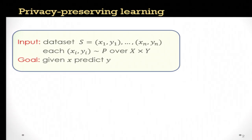We'll be looking at the standard setting of supervised learning in which you're given a data set which consists of n labeled examples, which for most of this talk we'll be thinking of as being drawn IID from some unknown distribution P. Our goal is to be able to predict the label of any given point.